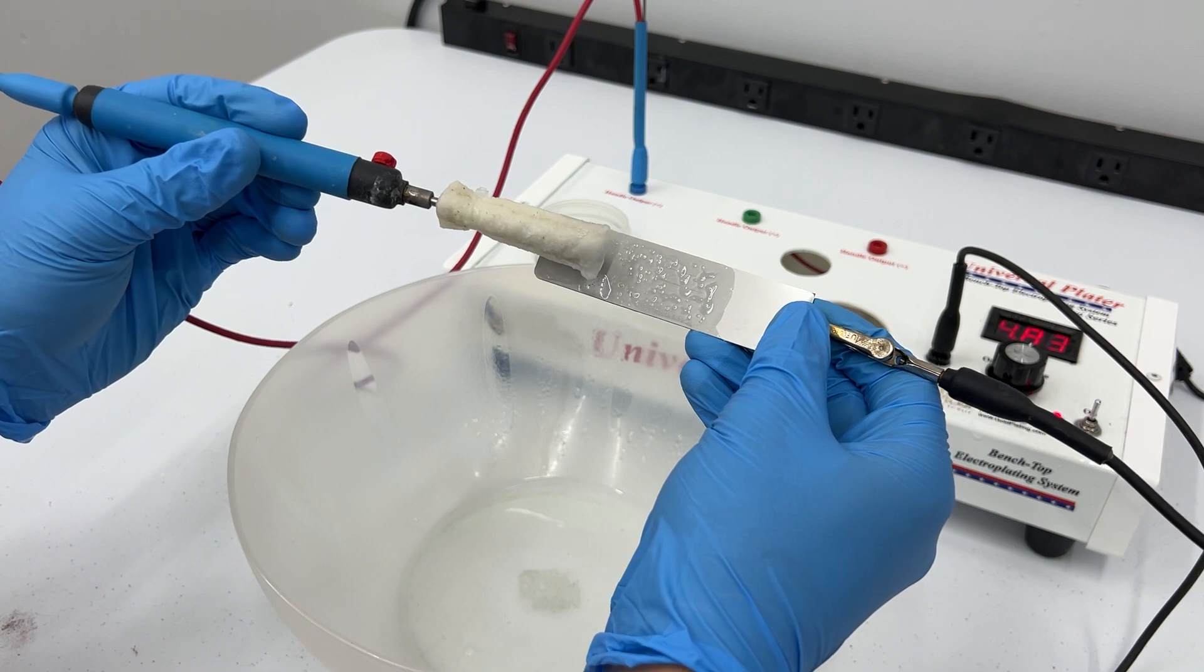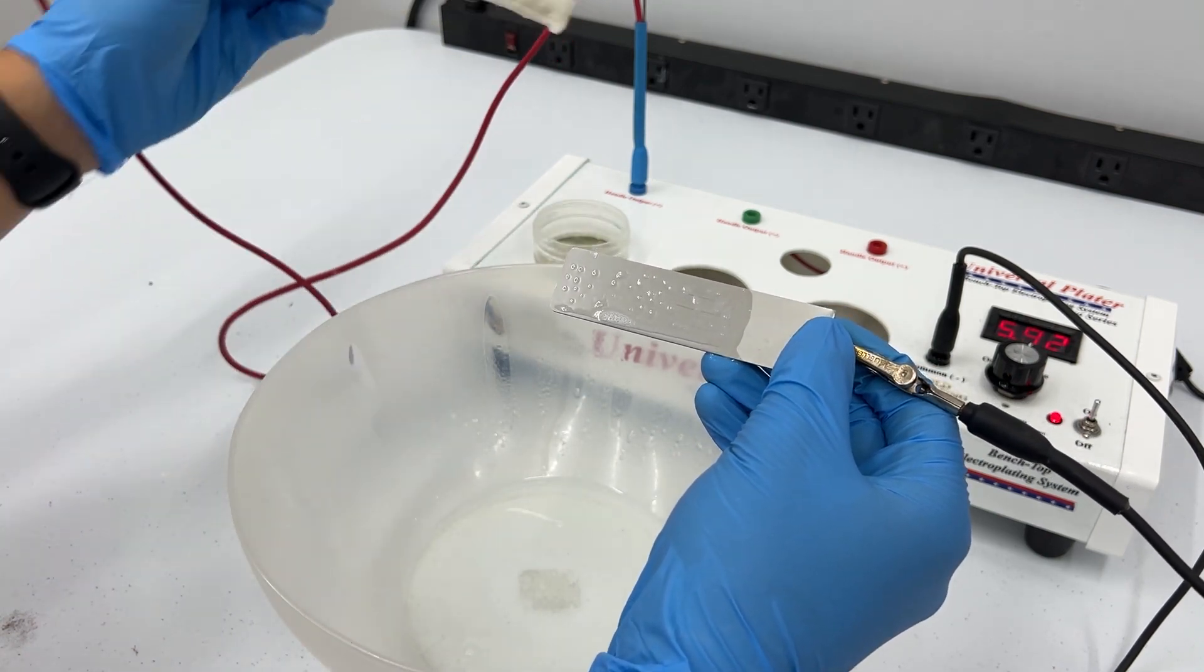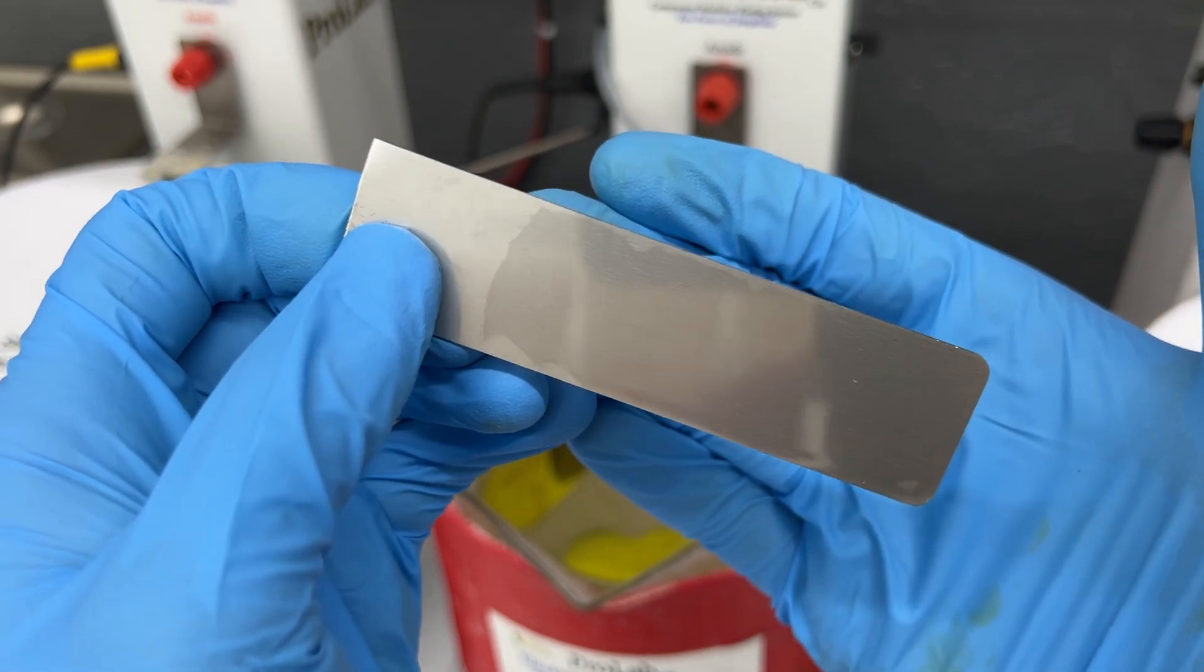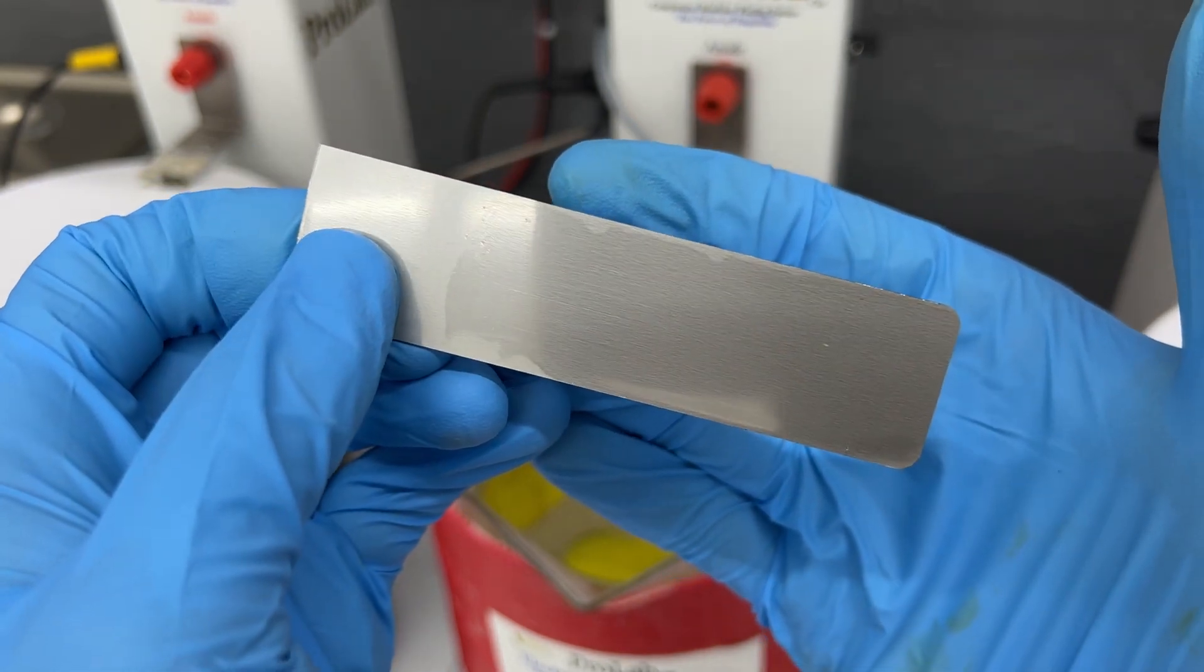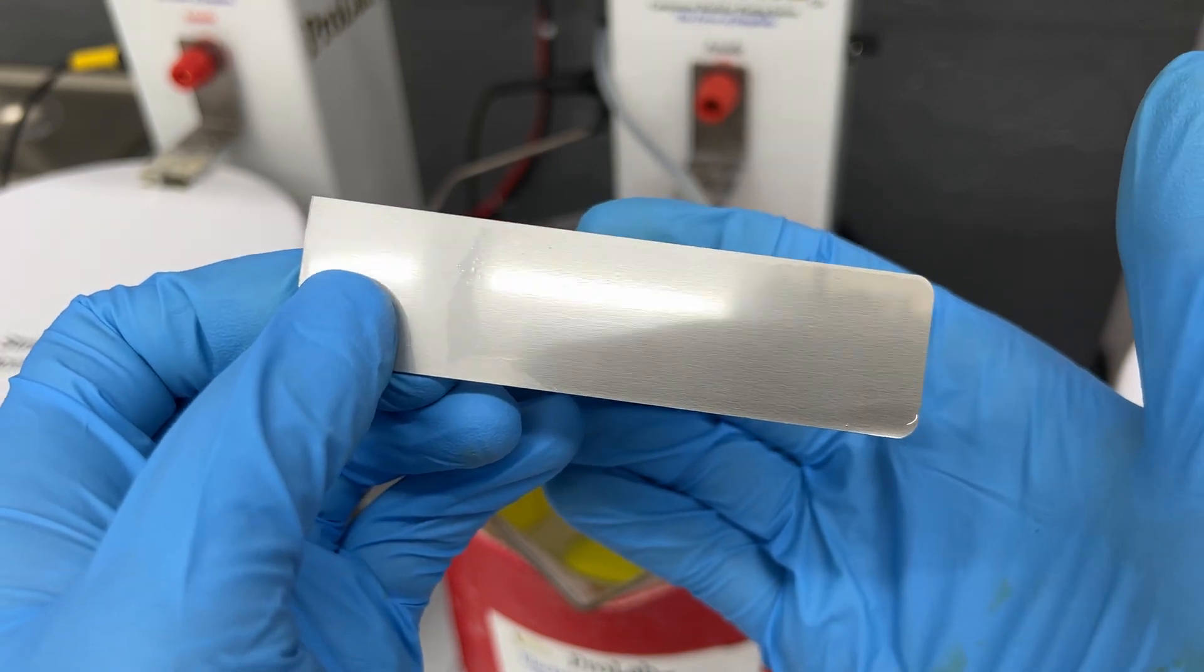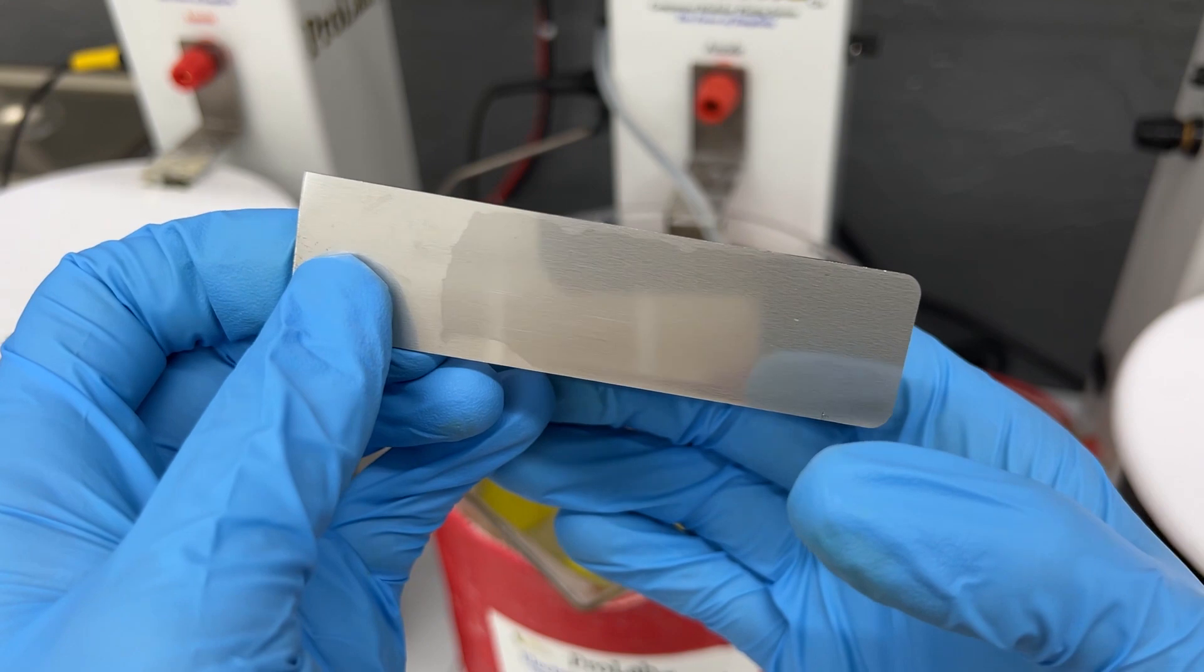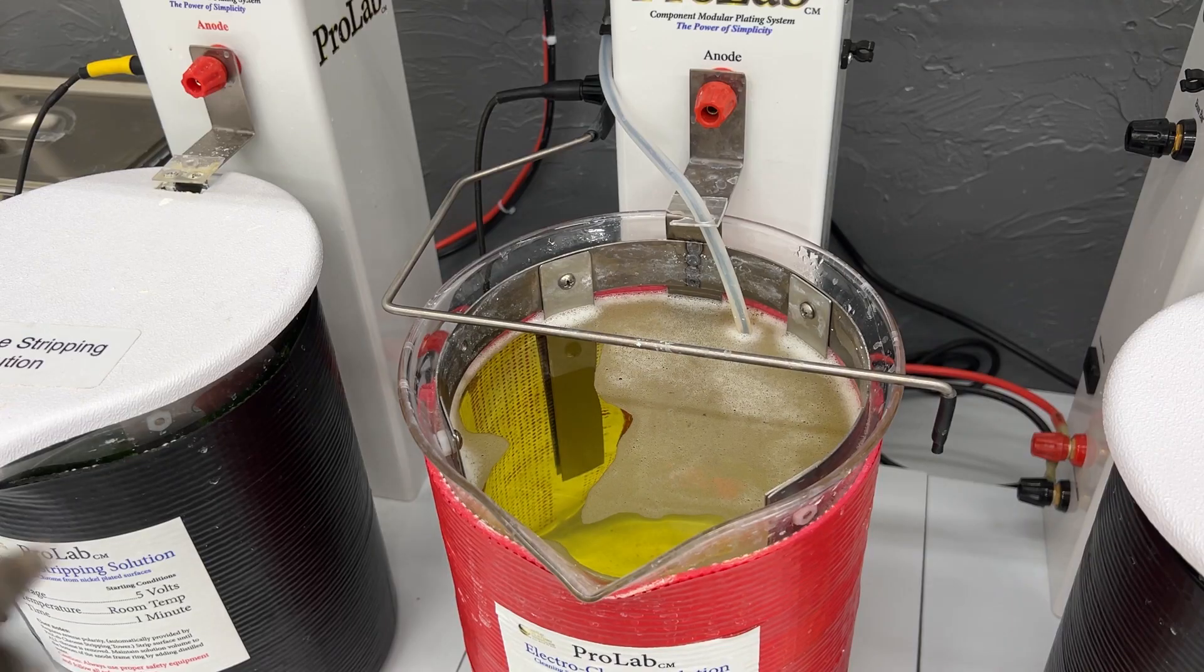Now if your item dries out like this piece here, you can see the wet out is starting to go away. If this happens at any point during the plating process, you need to start over with electro cleaning it. Here are just a few items that could cause potential problems when plating.